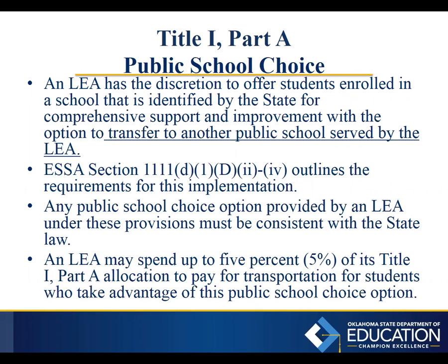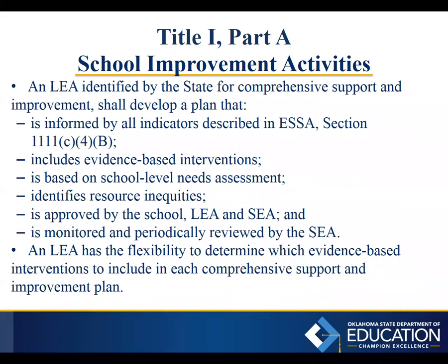Public school choice is another flexibility under Title 1 Part A. Keep in mind that this is an option, not a requirement anymore. An LEA has discretion to offer students enrolled in a school identified for comprehensive support and improvement the option to transfer to another public school served by the LEA. ESSA Section 1111 outlines all requirements for this implementation. Any public school choice option must still be consistent with state law. An LEA may also spend up to 5% of its Title 1 Part A allocation for transportation for students who use this option. Under No Child Left Behind this was a requirement, but under ESSA it is an option.